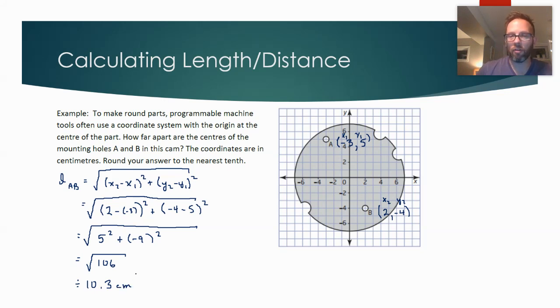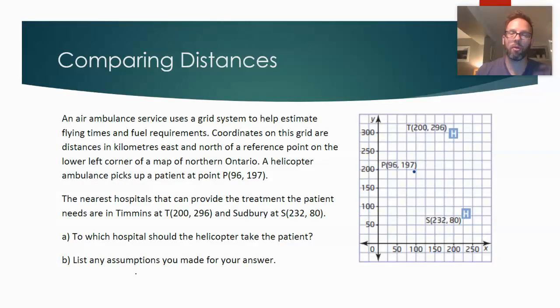And the units in this question were stated in the problem, so it's 10.3 centimeters. So yeah, just finding the length between two points, the motivation is Pythagorean theorem. We just use rise and run and our formulas for those to create an equation for distance. One more example, guys, and we're done.